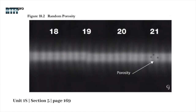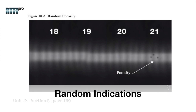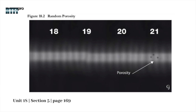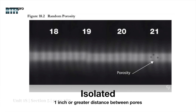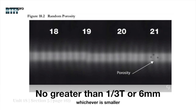Figure 18.2 is a radiograph showing random porosity. According to ASME codes, each pore cannot be greater than 1/4 T or 4 millimeters, whichever is smaller, for random indications. When the pore is isolated with 1 inch or greater distance between pores, the indication shall not be greater than 1/3 T or 6 millimeters, whichever is smaller.